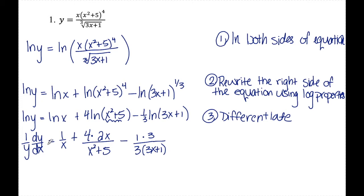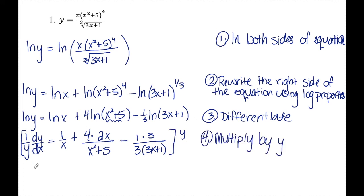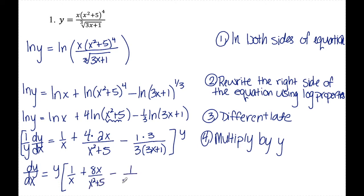The last step is to solve for dy/dx by multiplying both sides by y. The y and 1/y cancel on the left, giving dy/dx. On the right I have y times the whole expression: 1/x plus 8x over (x² + 5) minus 1 over (3x + 1), where the threes cancelled.